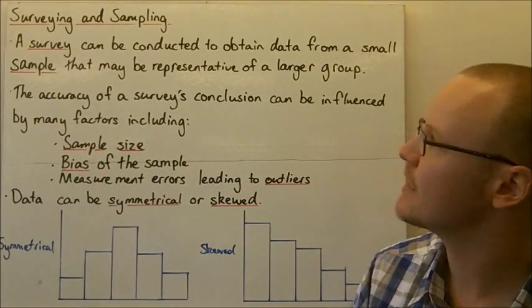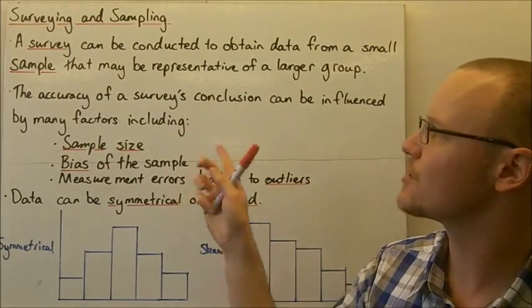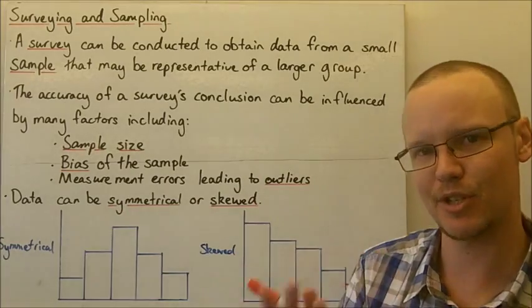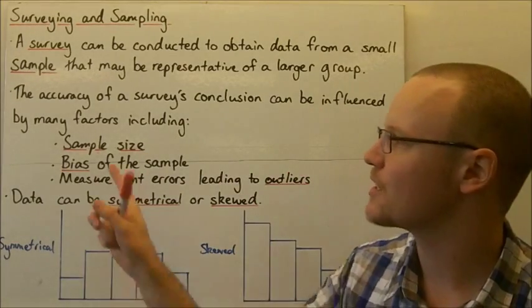So the accuracy of a survey can be compromised, not really the survey but the conclusions of the survey. So what the survey shows, they can be influenced by factors including sample size.